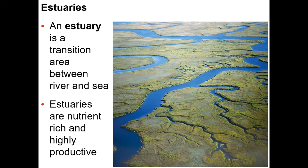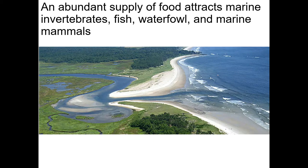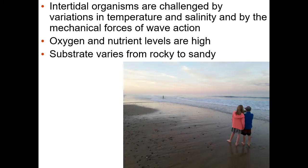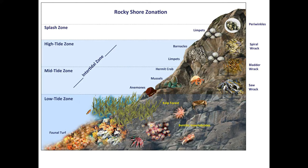An estuary is a transition between the sea and fresh water — these are typically very nutrient-rich and productive. Fish often go there to lay eggs. An intertidal zone is an area that is sometimes covered by the ocean and sometimes not, as tides go in and out. Organisms adapted to this zone are remarkable because they must survive both dry and submerged conditions.